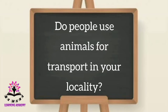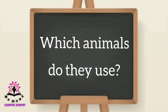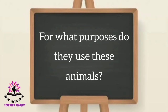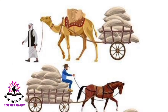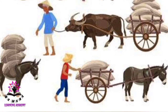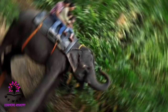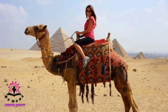Now let us answer a few questions. Do people use animals for transport in your locality? Yes, people use animals for transport in a locality. Which animals do they use? They use bull, horse, etc. For what purposes do they use these animals? They use them mainly for transportation and also to carry goods. Now tell me the names of animals which were used for transportation in olden days — animals like bull, oxen, donkey, horse, and camel were used in olden days for transportation.